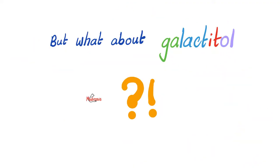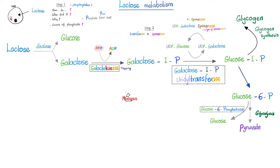How about galactitol, which comes from galactose, which comes from lactose? It can do the same thing. So let's talk about lactose metabolism. Here is lactose — the sugar found in milk and dairy products. By the lactase enzyme, it gets digested into glucose and galactose.